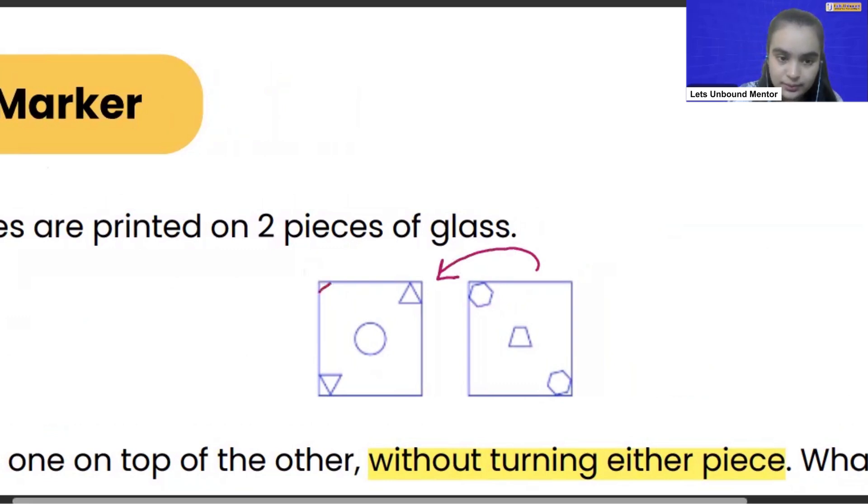We can see that there are hexagons on the corners, and then in between inside the square we will have trapezium or trapezoid. This is how our answer should look like.